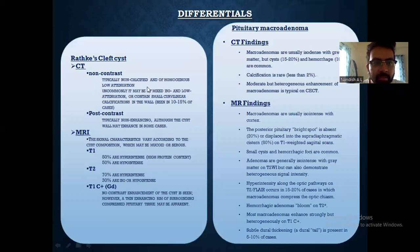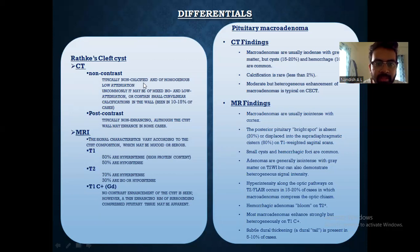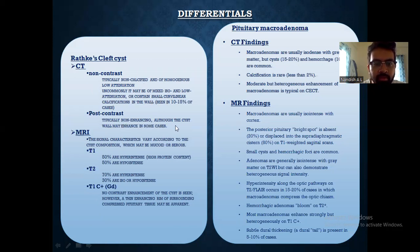The differentials include Rathke's cleft cyst. On non-contrast CT, it appears typically non-calcified and shows homogeneous low attenuation. Uncommonly, it may be of mixed iso to low attenuation or contain small eccentric calcifications. On post-contrast images, they are typically non-enhancing, although the cyst wall may enhance in some cases.